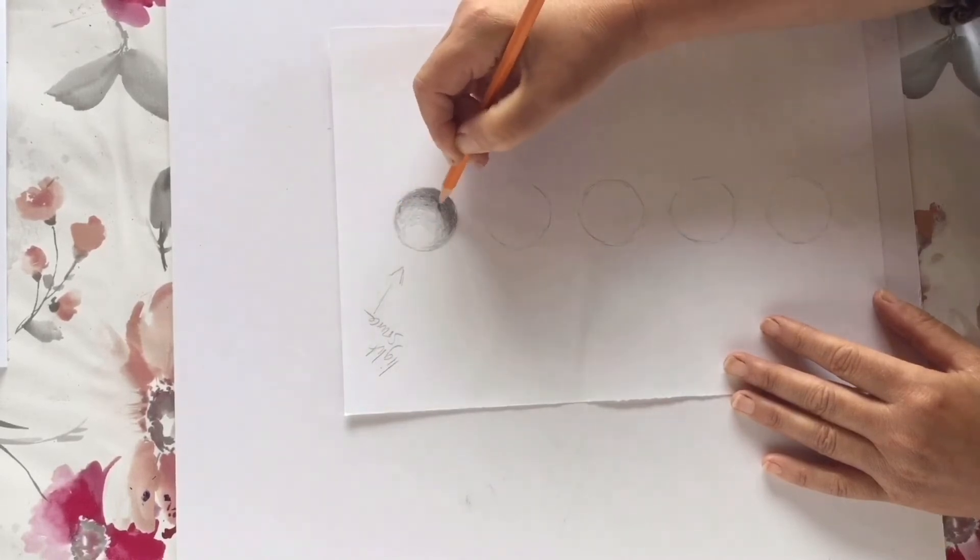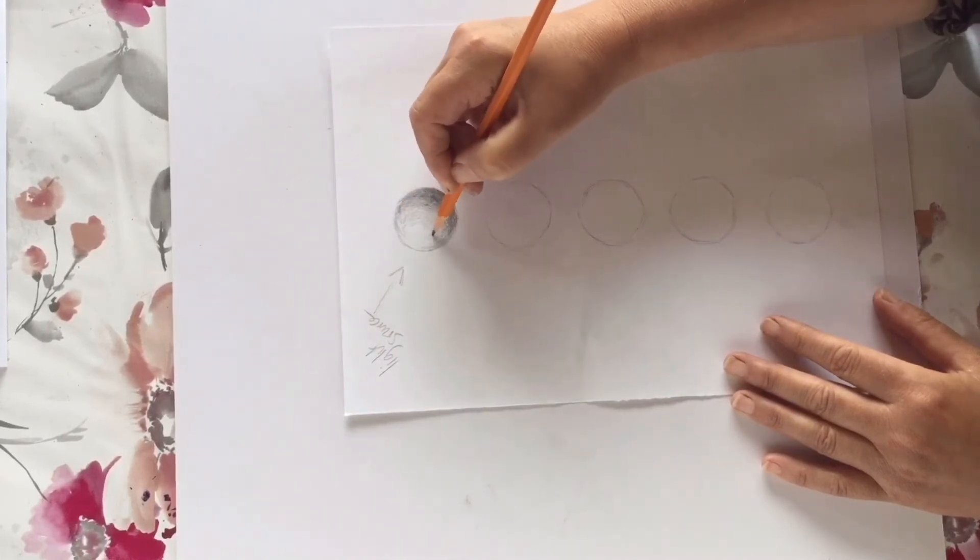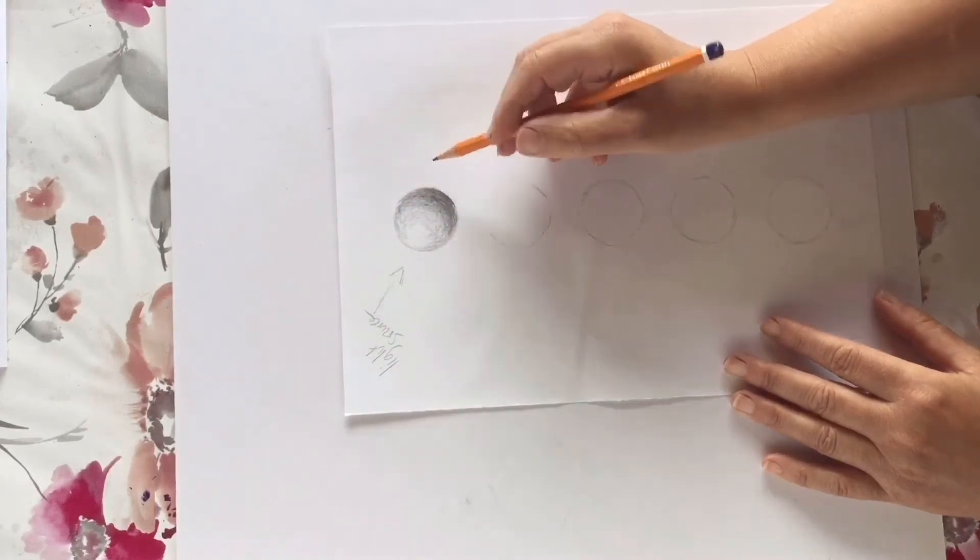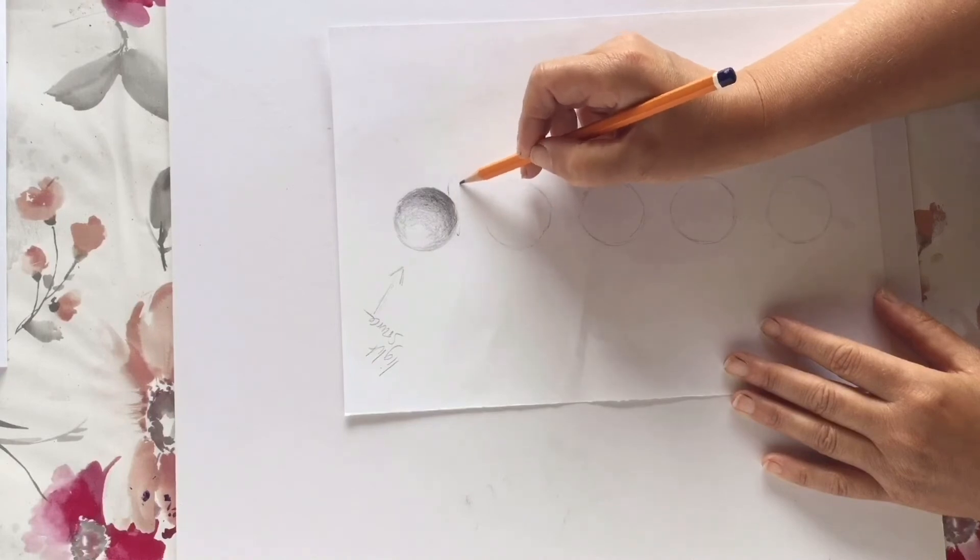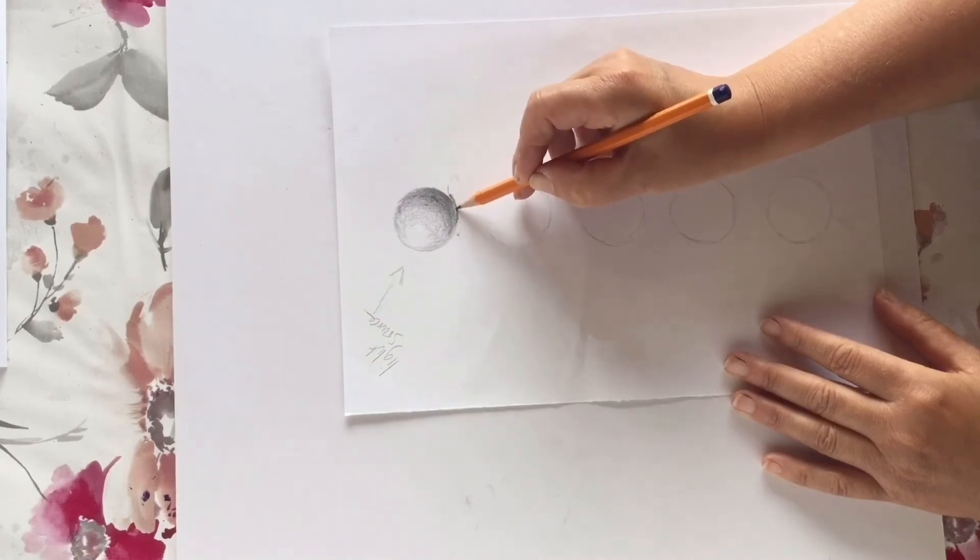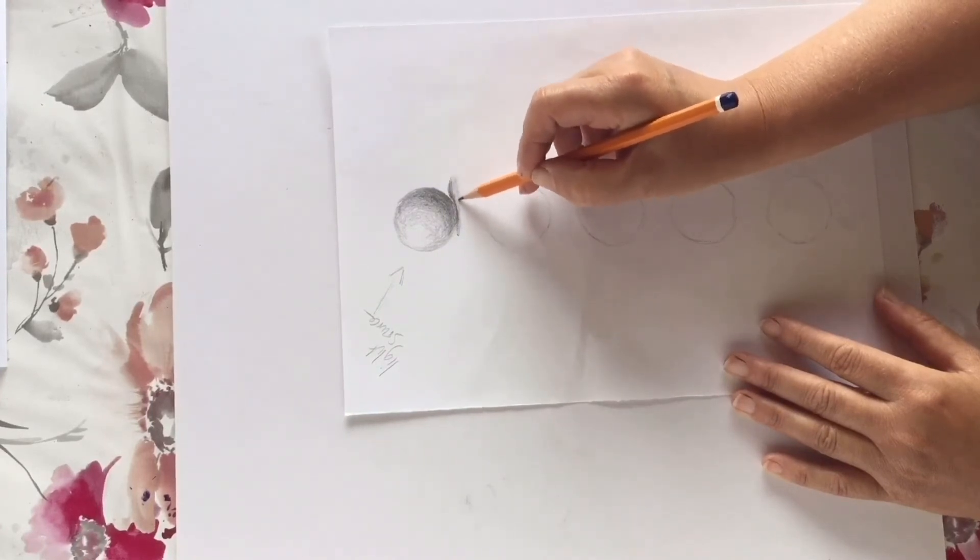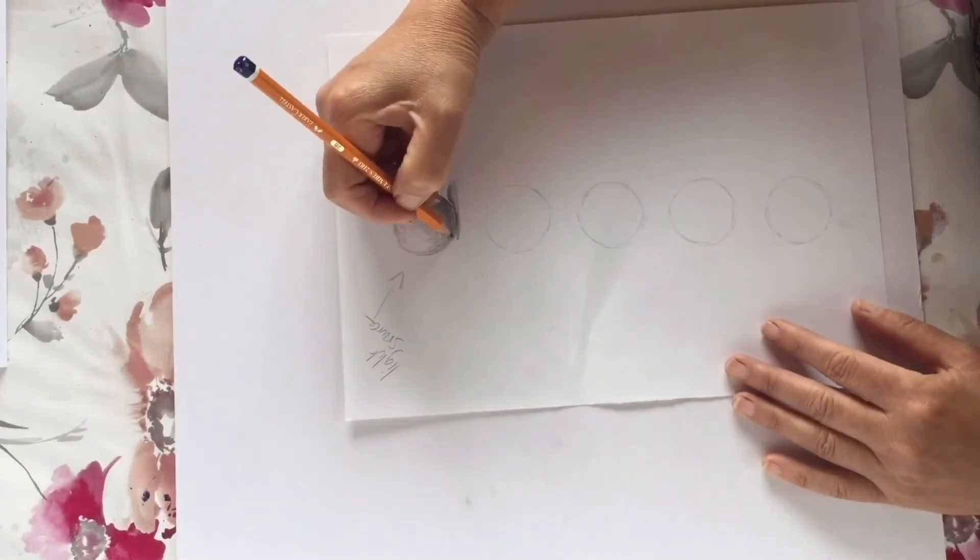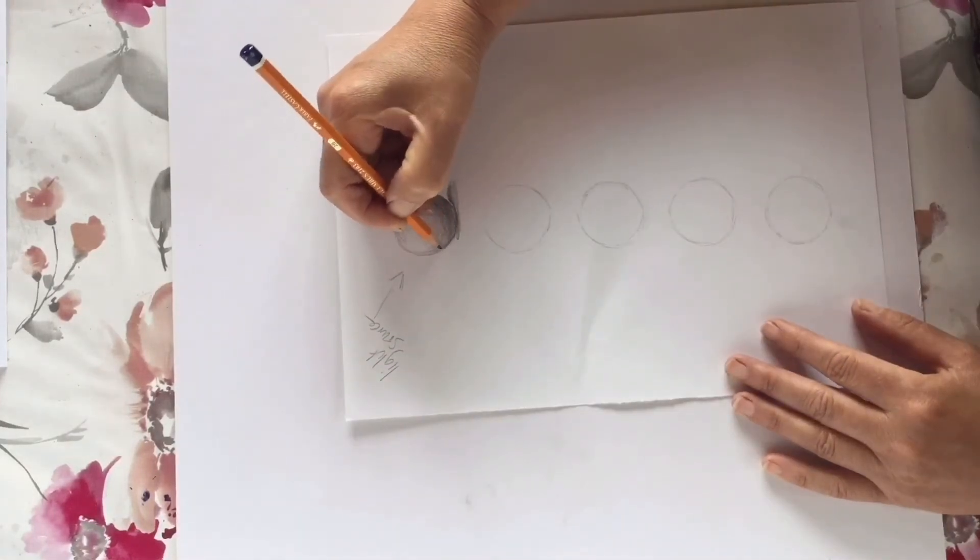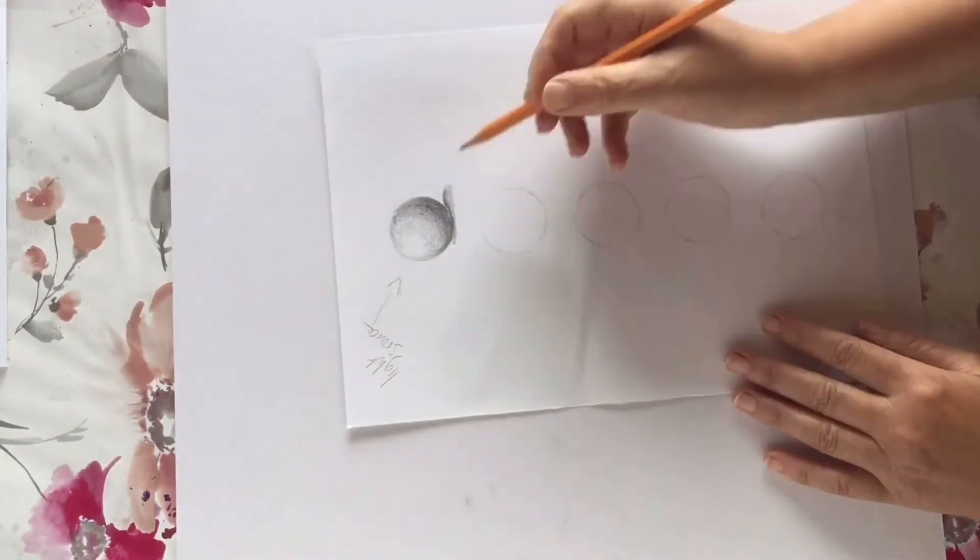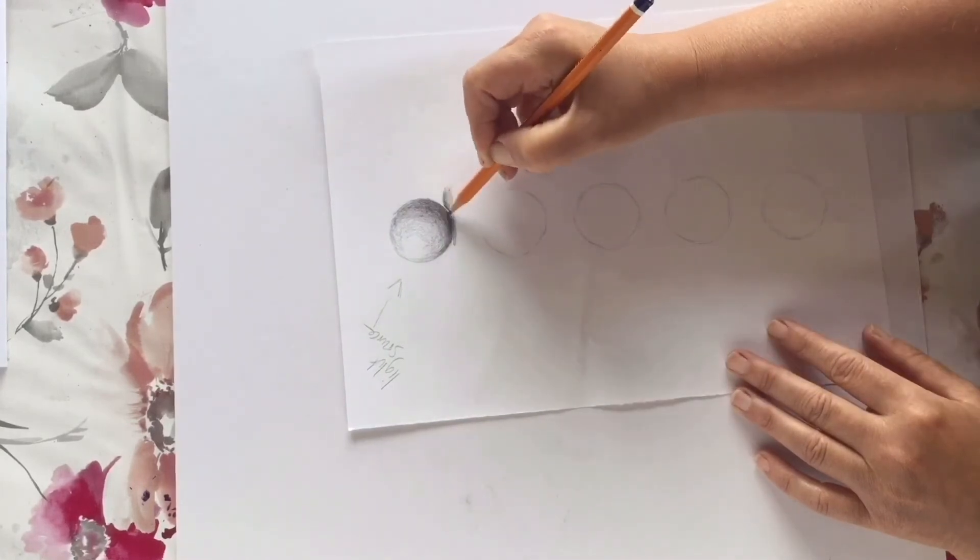When you think you have the object finished, don't forget to put the shadow underneath. This will make it look like it's sitting on the paper. Shadows aren't always darker than the object itself, but the darkest part of the shadow is always where the object is touching the surface that it's sitting on. Remember, as a shadow moves away from an object, it gets lighter and the edges of it get softer. Because the light source is coming from the top left hand corner, the shadow is reaching out a little further to the right hand side.